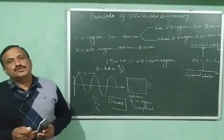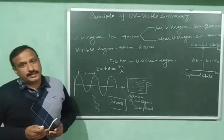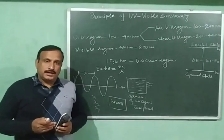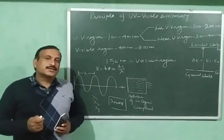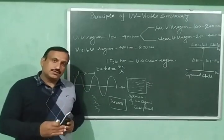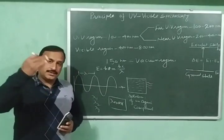This spectroscopy is also called electronic spectroscopy because it involves the excitation of electrons from the ground state to the excited states.